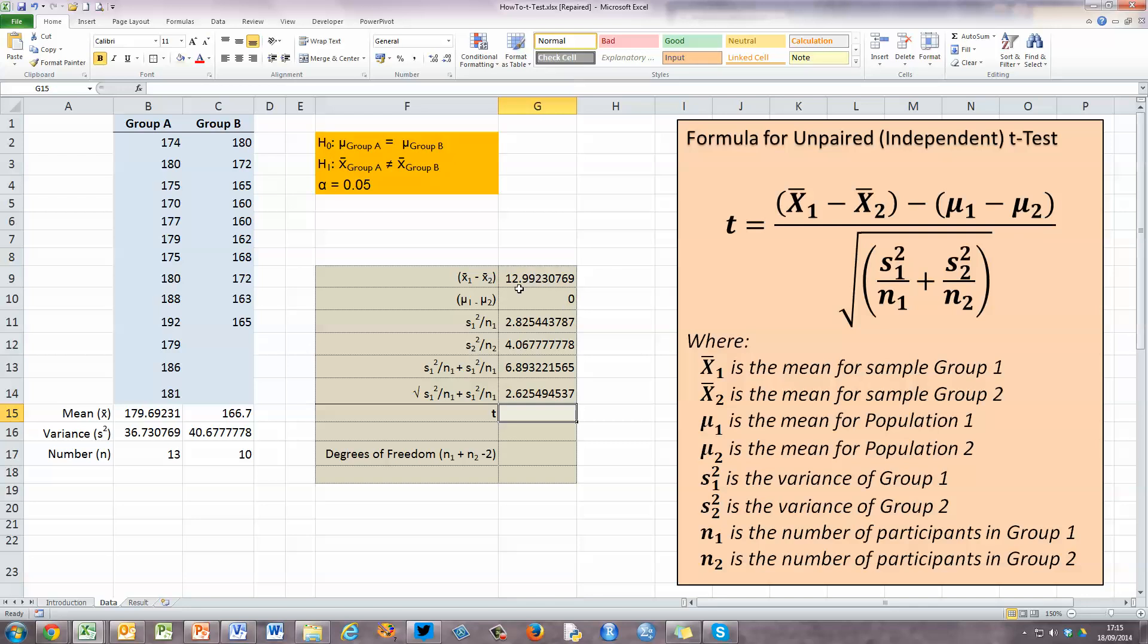So 2.625 represents all of the values in the denominator and underneath the line. We've got 12.96 here at the top, which gives us our numerator. All we've got to do now is divide one by the other. So I'm just going to type in equals X̄₁ minus X̄₂ and divide that by the value that we've just calculated in the cell above here and press enter. And we get a value of 4.9485. So that's our t value.